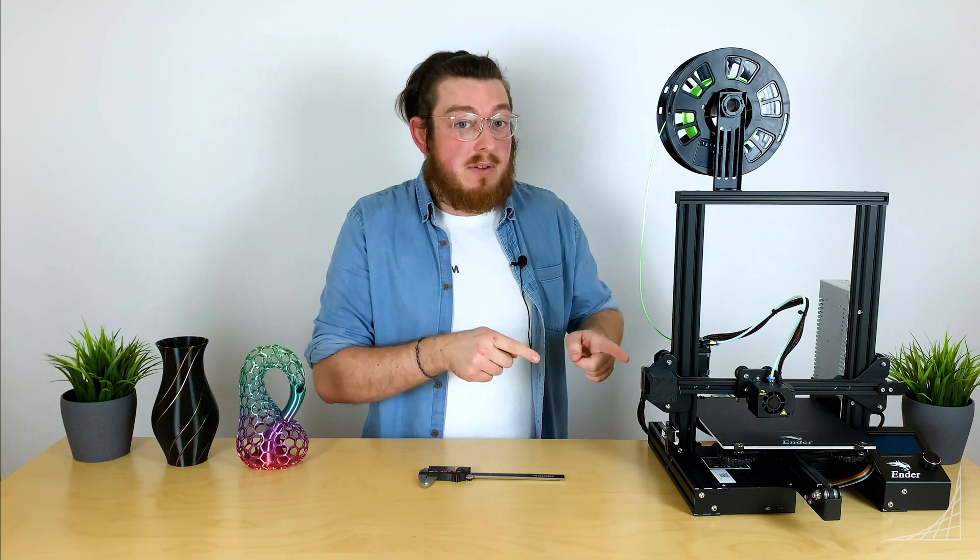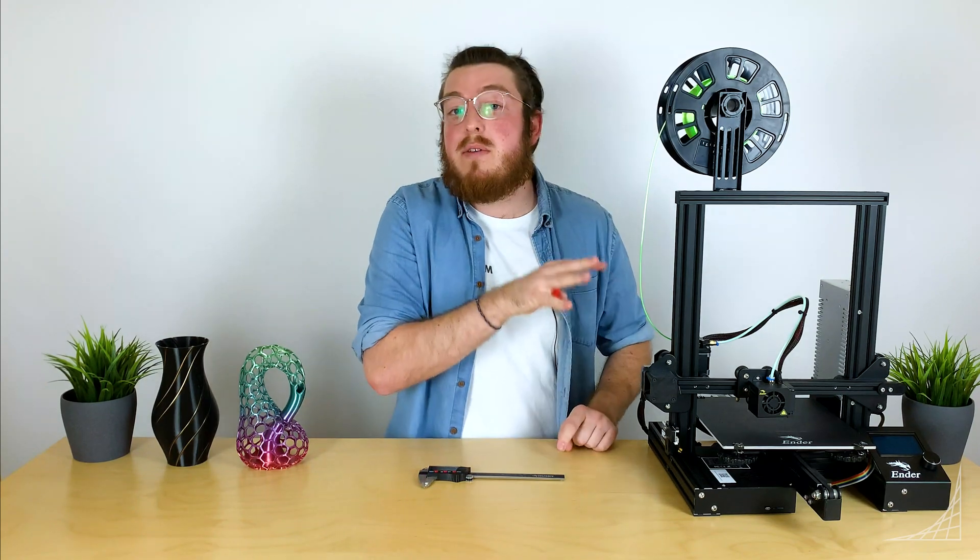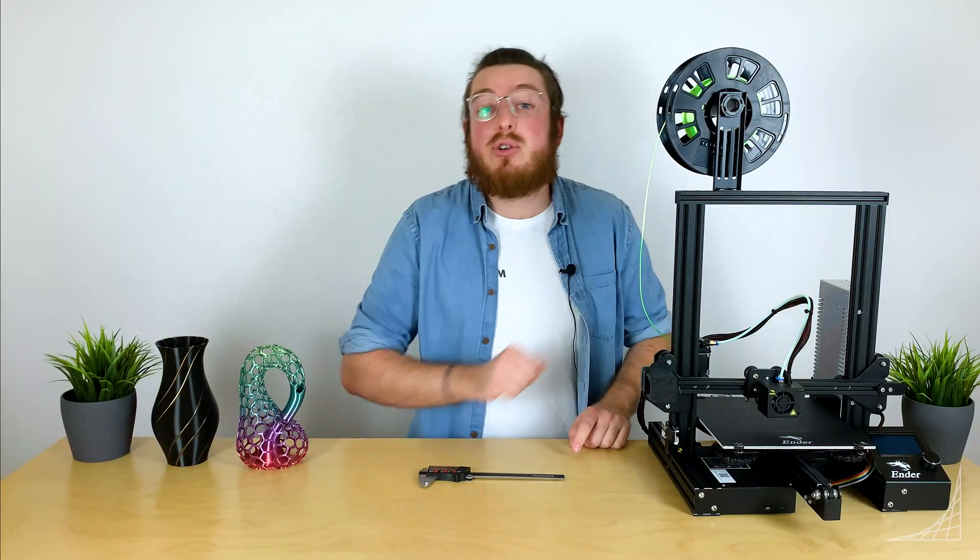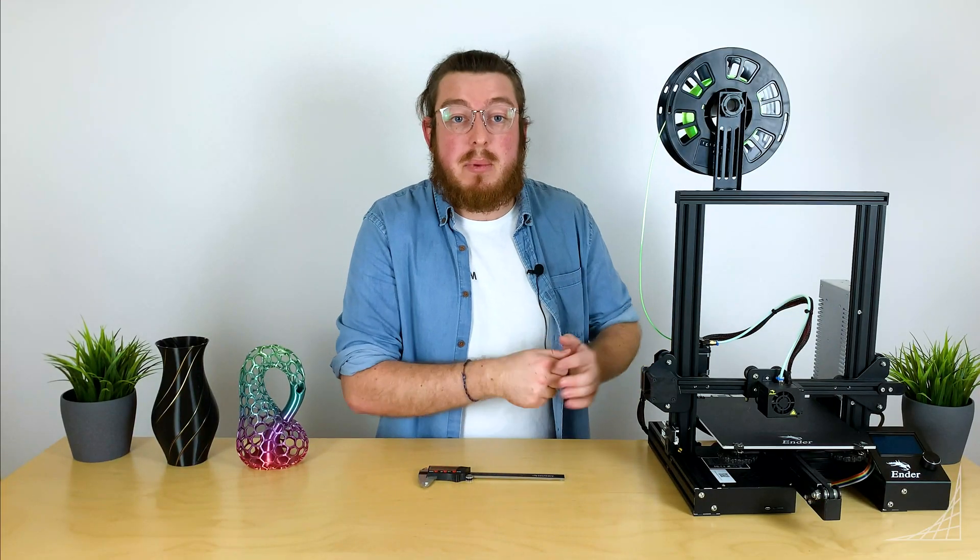If you remember from the assembly video, the motors that drive our printers are known as stepper motors. They work by having an incremental gear system or an electronic gear system known as steps. For example, if we want to move the x-axis one millimeter, we need to send 80 electronic pulses to our step motor.